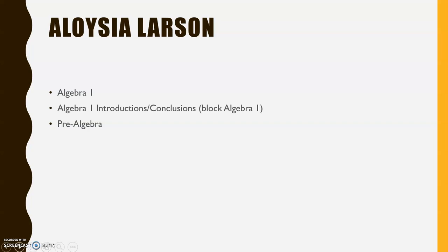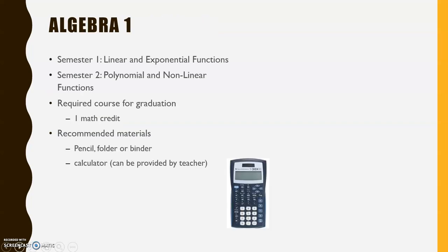I'll tell you a little bit about what each of these classes are. Algebra 1 is a full-year math class. In the first semester, we study linear and exponential functions, and in the second semester, we study polynomial and non-linear functions. This is a required course for graduation, and it's worth one math credit.